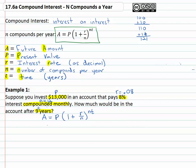So let's plug that into our equation. A equals the principal present value, thirteen thousand dollars, times one plus the rate, which is point oh eight, over the number of compounds, which is twelve, to the n t. N is the number of compounds twelve, times t is the time in years, which is nine.